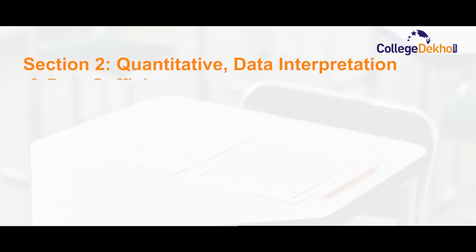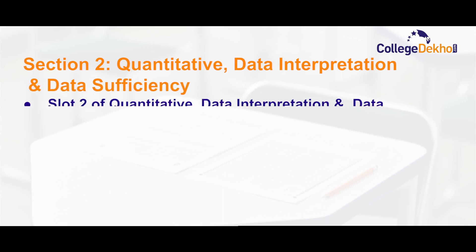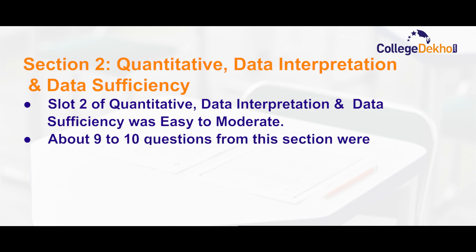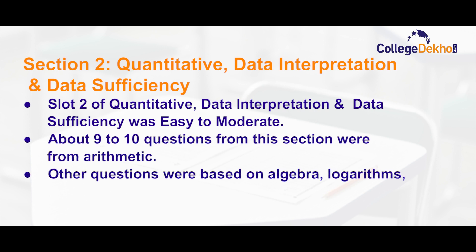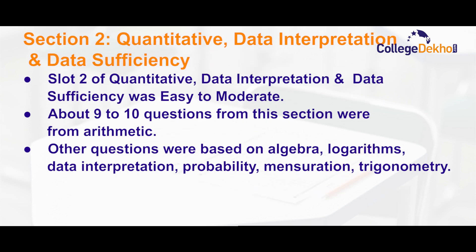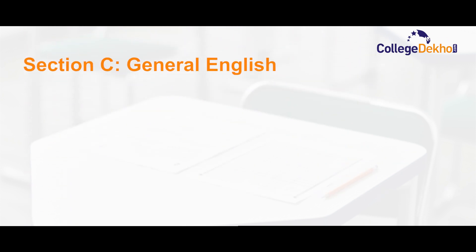Section 2, the Quantitative, Data Interpretation, and Data Sufficiency section, was easy to moderate. About 9 to 20 questions from this section were from arithmetic. Other questions were based on algebra, data interpretation, probability, and trigonometry.